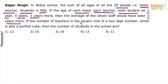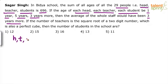If the number of teachers is the square root of a 2-digit number which is also a perfect cube, then the number of students in the school are. So let us assume that the number of teachers, number of heads and number of students are T, H, S respectively. These are the 3 values.